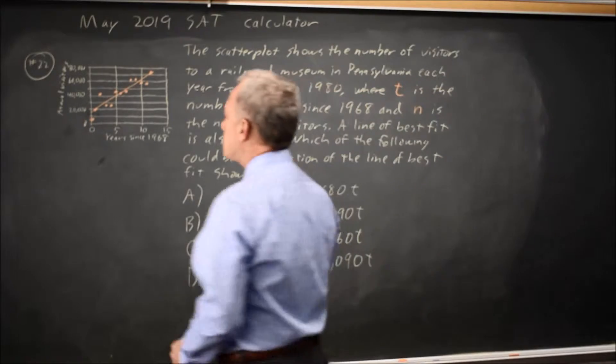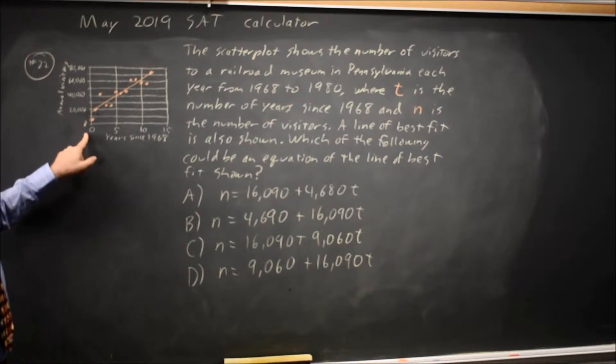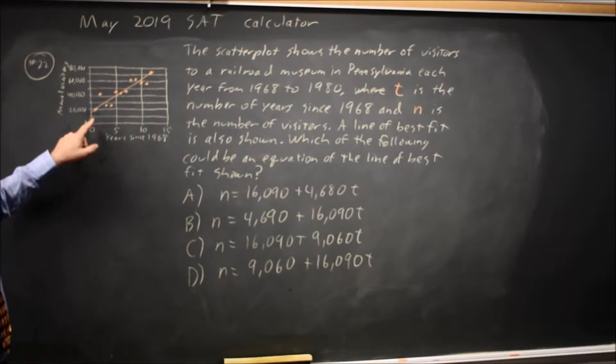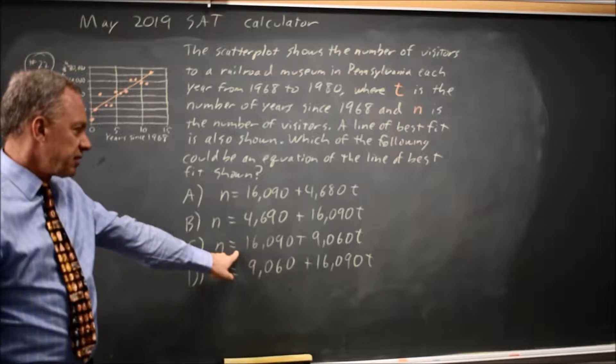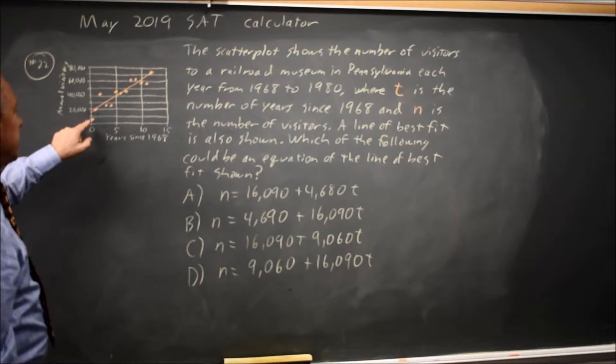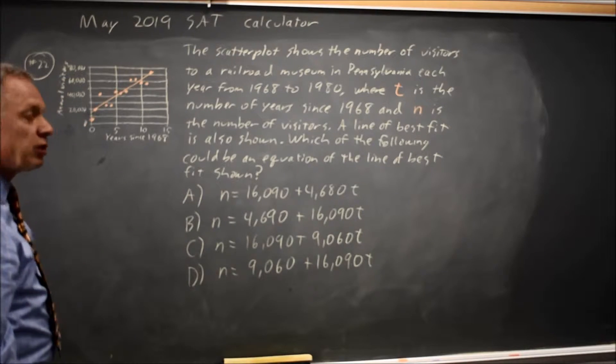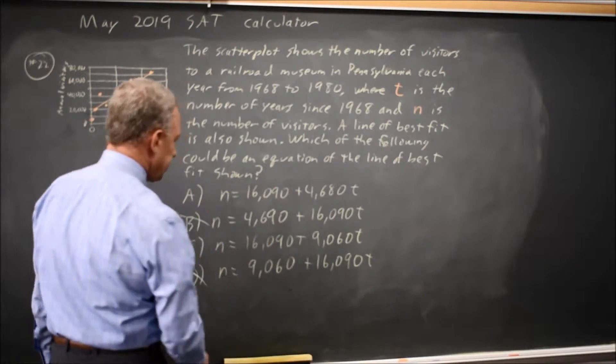And looking at this, we see the y-intercept at years since 1968 equals 0 is about 15,000 or so. Choices A and C have a y-intercept of 16,000, B and D have a y-intercept more like 5,000 which will be down at this single point but that's not on the line of best fit. So B and D are not correct.